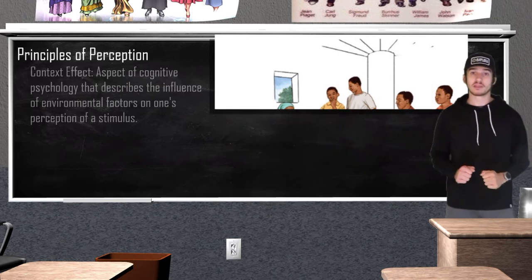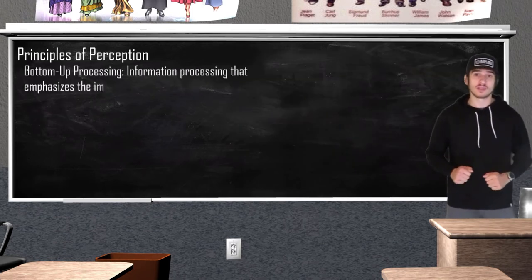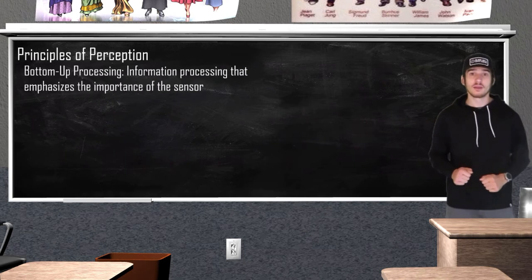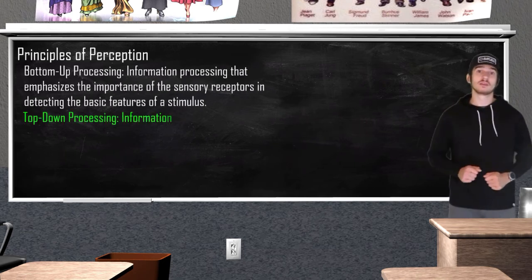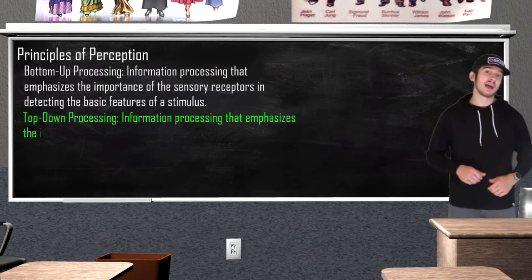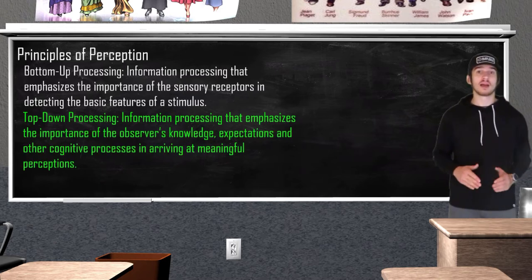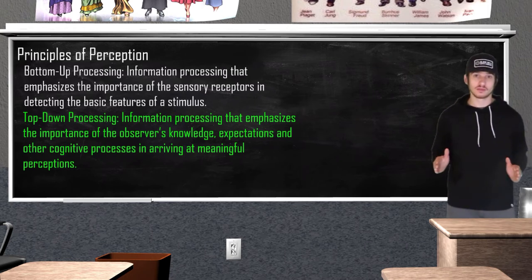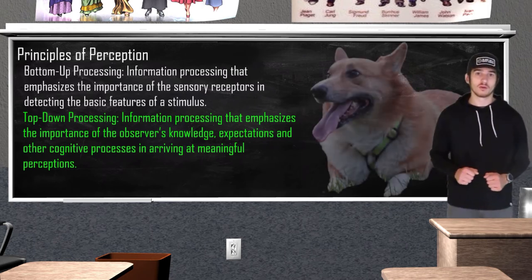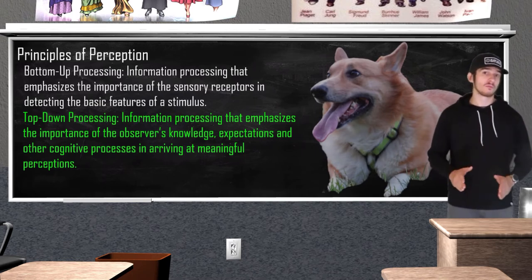Bottom-up processing is data-driven processing — it refers to the flow of sensory data from sensory receptors to the brain. Top-down processing is guided by higher-level cognitive processes; when using top-down processing, we rely on our past experiences and expectations. Looking at a picture of my corgi, bottom-up processing allows you to pick up on all the lines and colors, while top-down processing lets you draw on your experiences of seeing a corgi or a dog before.